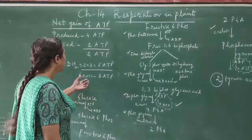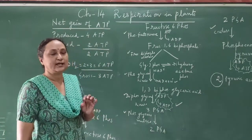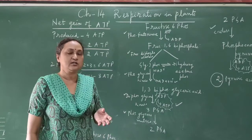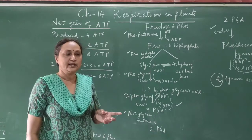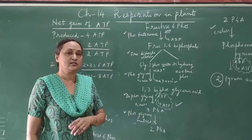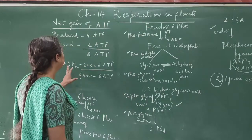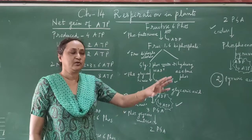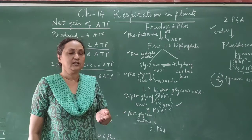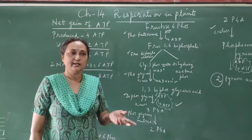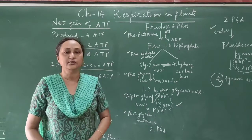The gross ATP from glycolysis is 8 ATP. The difference is that ATP can be used directly to produce energy, as it is the energy currency of the cell. However, NADH2 cannot produce energy instantly — only after the oxidative phosphorylation process can it produce ATP. ATP is like cash that you can spend directly, whereas NADH2 is like a check that you must first deposit in the bank before you can access the money.